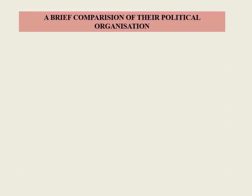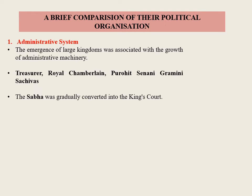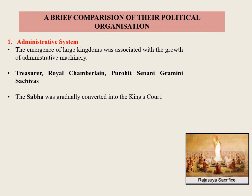A Brief Comparison of Political Organization: The later Vedic period saw many changes in political organization. We could see the emergence of Janapadas, or large kingdoms ruled by kings whose powers had grown enormously. The emergence of large kingdoms was associated with growth of administrative machinery. The most important officials were the treasurer, the collector of taxes, and the royal chamberlain who managed the household of the monarch.